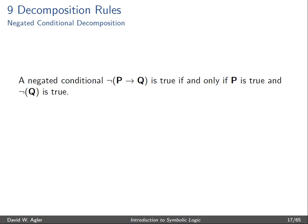And so this gives us one scenario under which a negated conditional can be true — that is, when P is the case and not Q is the case. And so we stack the propositions underneath the negated conditional in order to indicate the conditions under which it's true.